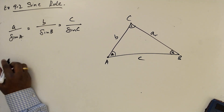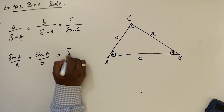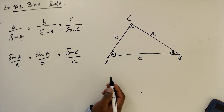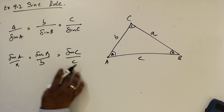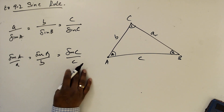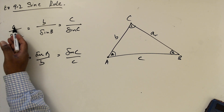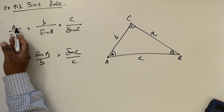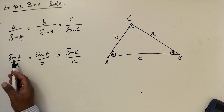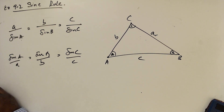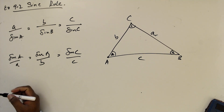This is also correct written the other way: sine A over a, sine B over b, and sine C over c. We can use either form according to the question. If the question asks about a distance, we write the distance in the numerator. If the question is asking about an angle, then we write the angle in the numerator — so it depends on the way the question is asked.